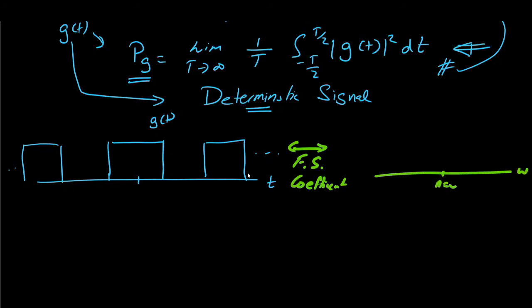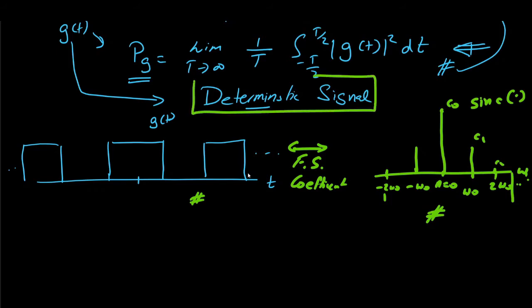At n equal to 0, we have dc value, we have omega 0, 2 omega 0 and so on. The spectrum is simply a stem plot of a sinc function. We may have a sinc function with c0, c1 and so on. This analysis in the frequency domain is only available for deterministic signals. But what if this signal g of t is a random signal?